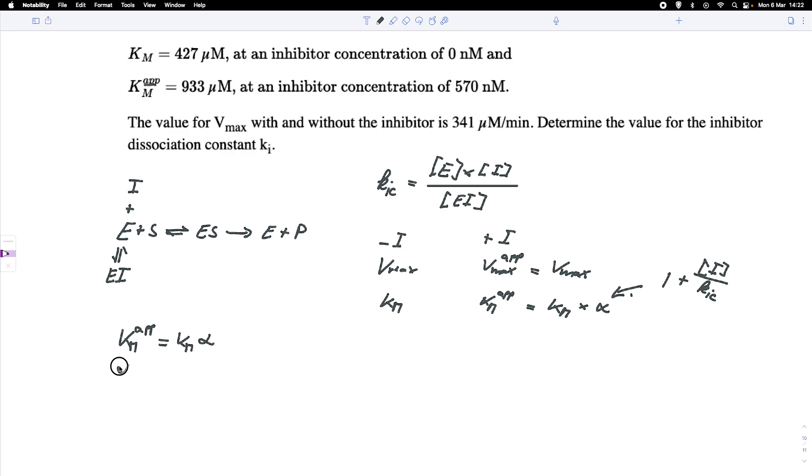So alpha equals KM up, apparent KM divided by KM.